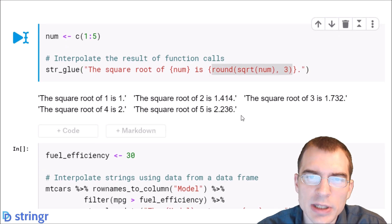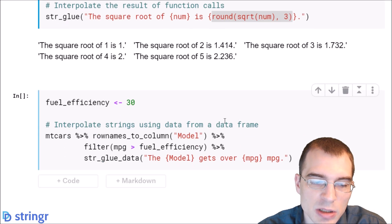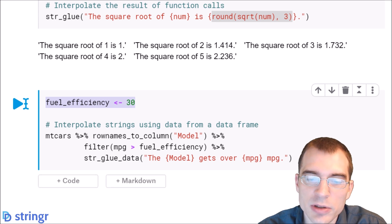And finally, we'll show an example of doing interpolation using a data frame. So to do that, we can use the str_glue_data function. I'll walk you through what this code is doing. First, we're just storing a fuel efficiency value that we're going to use later in the string we're making.